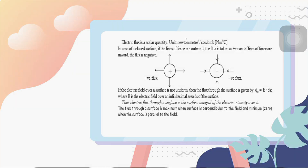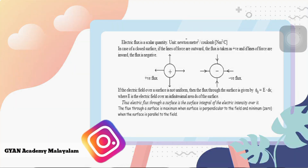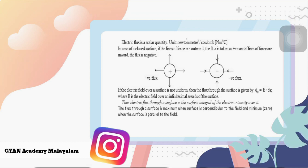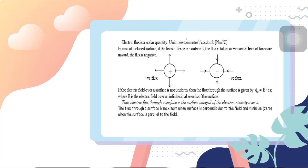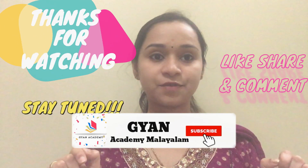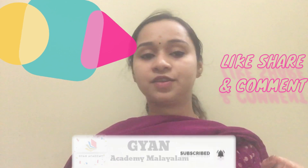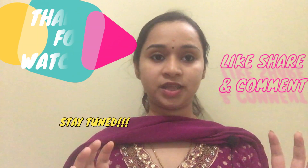The flux through a surface is maximum when the surface is perpendicular to the field and minimum when the surface is parallel to the field. In this class, we have covered electric lines of force, electric flux, and the characteristics of electric lines of force.